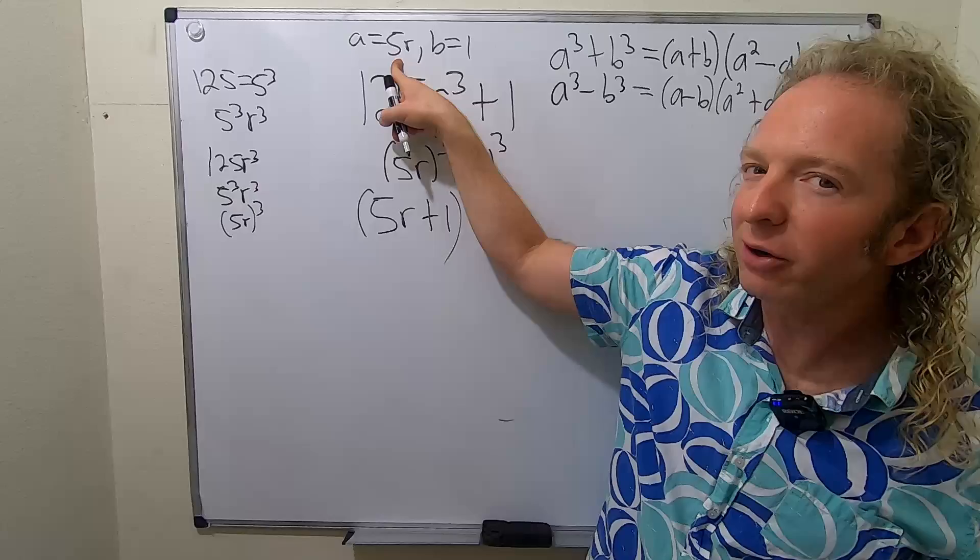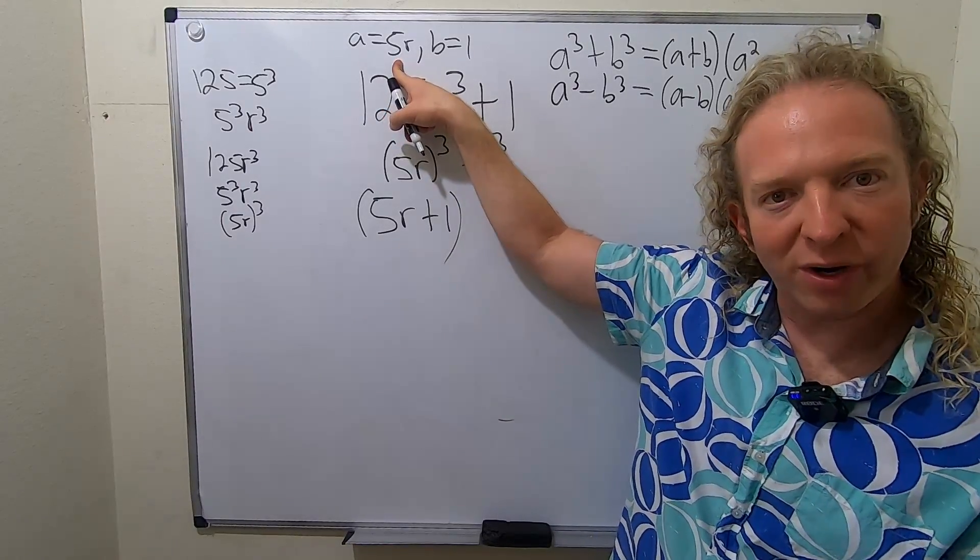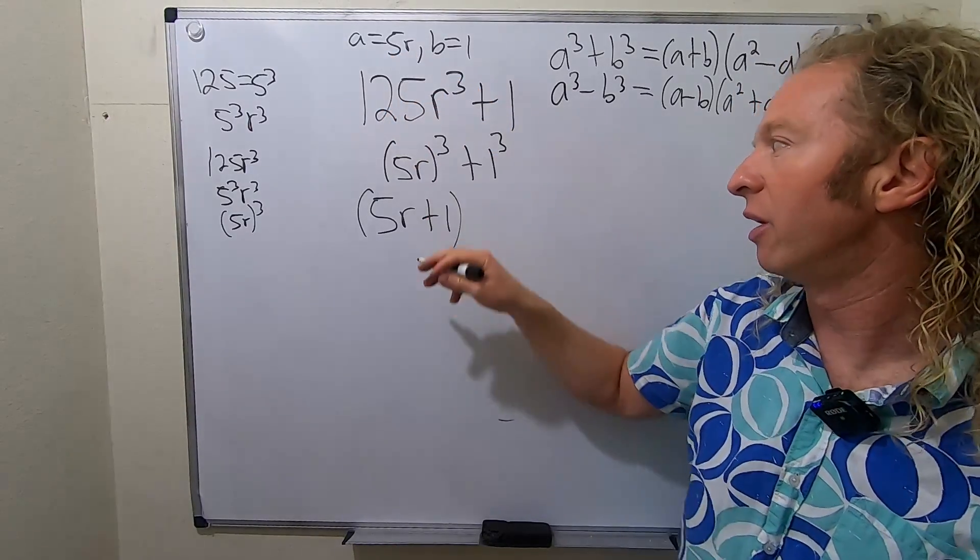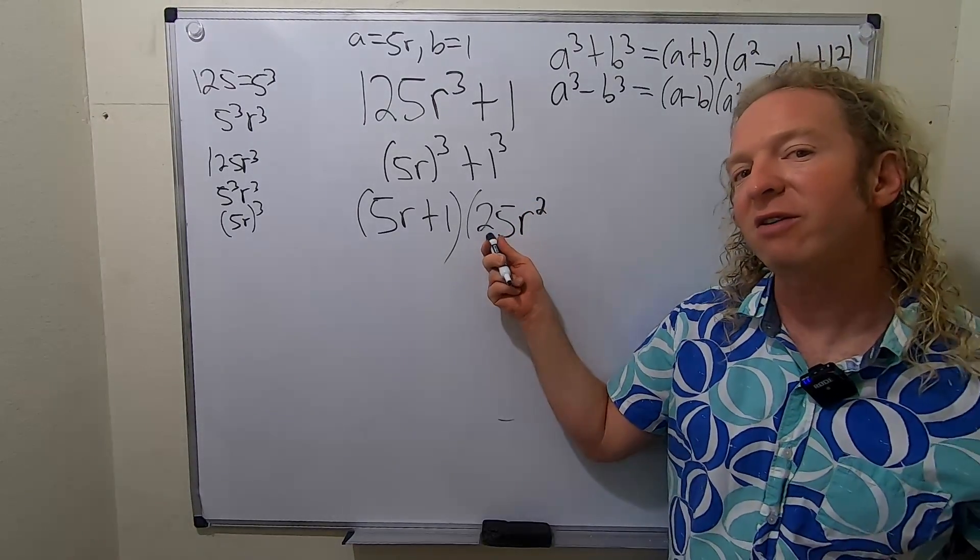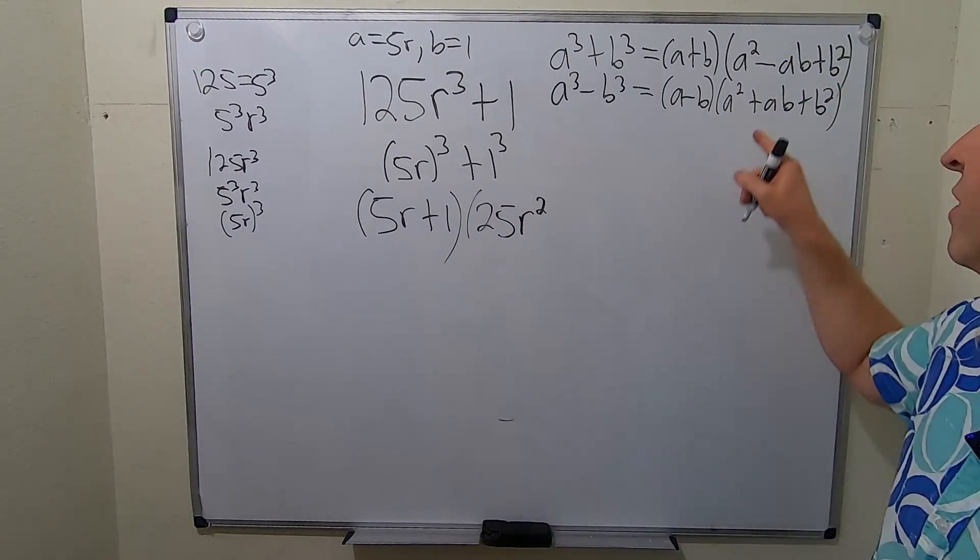So when you square 5R, you're going to get 25R², right? Because you square the 5 and you square the R. So this is 25R², right? Because you square the 5, you square the R. Then it's minus.